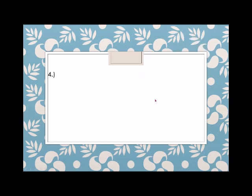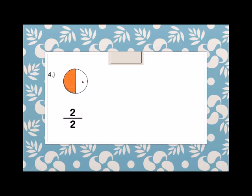Another example: 2 over 2. So we have a circle. How many parts? 1 and 2. And how many shaded? 2 also. So we have to shade 1 and 2. So this is 2 over 2.